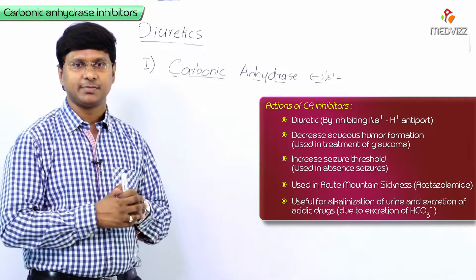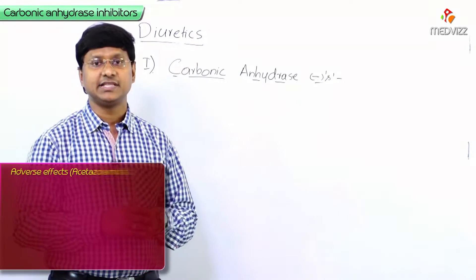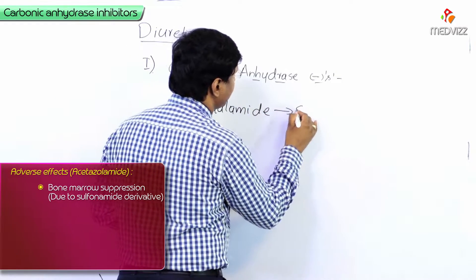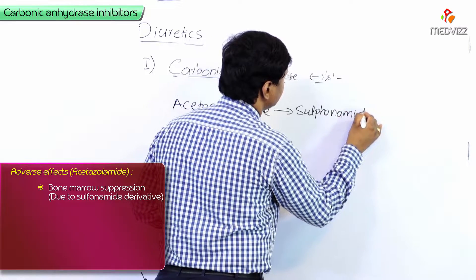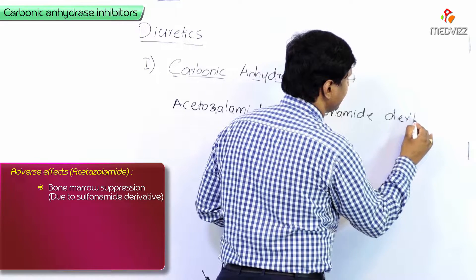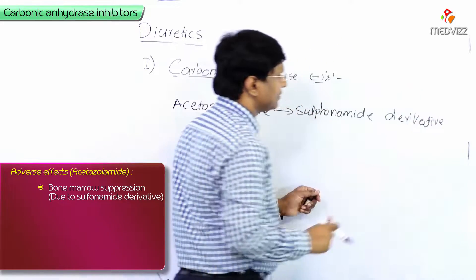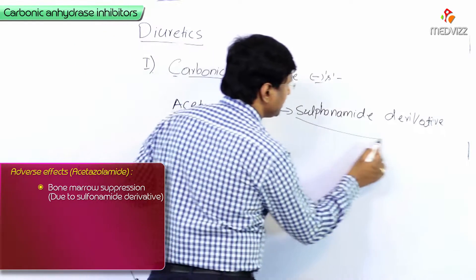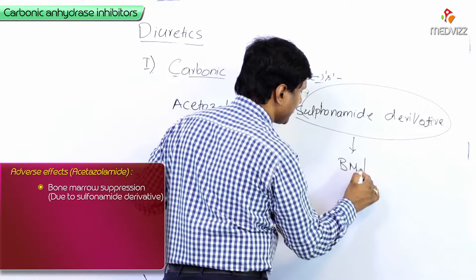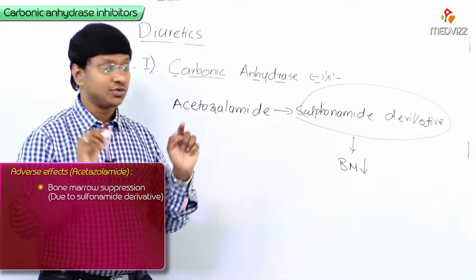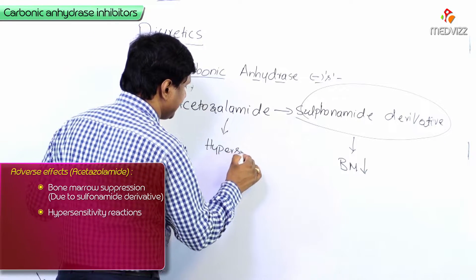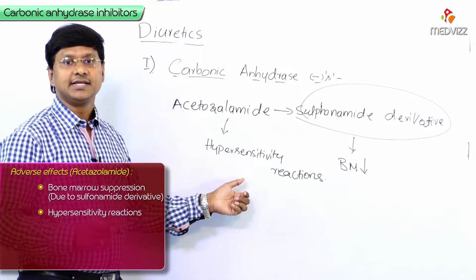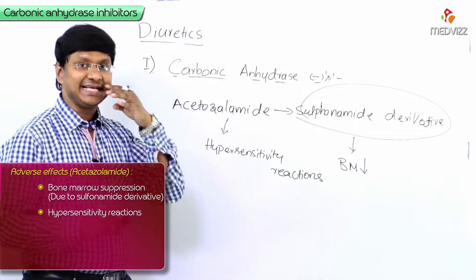We have discussed the various uses of acetazolamide, but remember there are certain adverse effects associated with it. Now, acetazolamide is a sulfonamide derivative, and because of this, it will cause bone marrow suppression. Not only that, acetazolamide is also associated with hypersensitivity reactions.